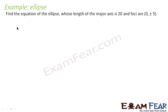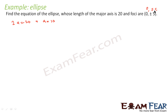Here we have to find the equation of an ellipse whose length of major axis is 20, so 2a = 20, giving a = 10. Also the foci are 0, ±5. The foci is always of the form 0, ±c, so c is equal to 5.